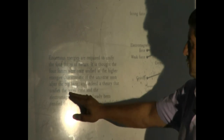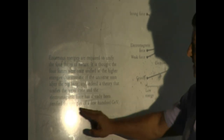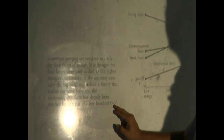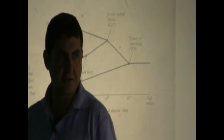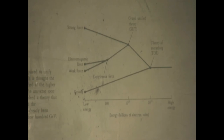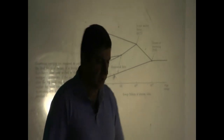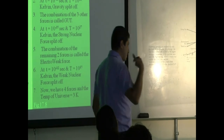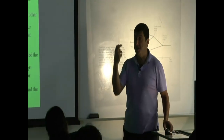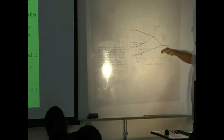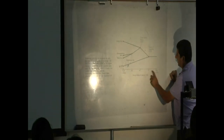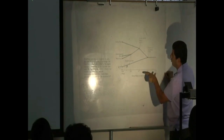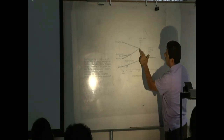It is thought the four forces were once unified at the higher energies characteristic of the universe soon after the Big Bang. A theory that unifies the weak force and the electromagnetic force has already been verified for energies of a few hundred gigaelectron volts. Have you heard of particle accelerators? Fermi, Stanford, the famous one in Geneva — they accelerate particles to very high energies. Their goal is to reproduce the conditions that existed at the high energies of the early universe — 10 to the 15, 10 to the 19. So far, they've been able to reproduce the energies of the electroweak force.